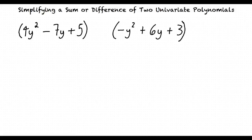In this video we will cover the topic Simplifying a Sum or Difference of Two Univariate Polynomials. In this topic we will learn how to simplify two polynomials such as 4y squared minus 7y plus 5 and negative y squared plus 6y plus 3.